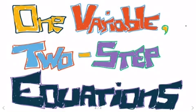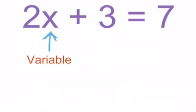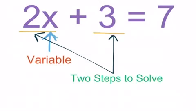One variable, two step equations. We're going to talk about solving these and also modeling these. An example is 2x plus 3 equals 7 — a one variable, two step equation. The variable is the x, or it could be y, a, b — the letter. The unknown value in our equation is always the variable. Two steps meaning that we have two things to do on the left side of the equal sign. The 2x and the plus 3 give us two steps we're going to need to solve for x.